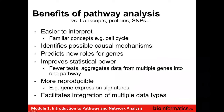Just to summarize the benefits of pathway analysis versus transcripts, proteins, and SNPs: pathways are typically easier to interpret because they work with familiar concepts like apoptosis or the cell cycle, compared to SNPs or genes. It helps identify possible causal mechanisms. It can be used to predict new roles for genes — we might identify genes that are linked to a disease. And it improves statistical power in the way that I explained.